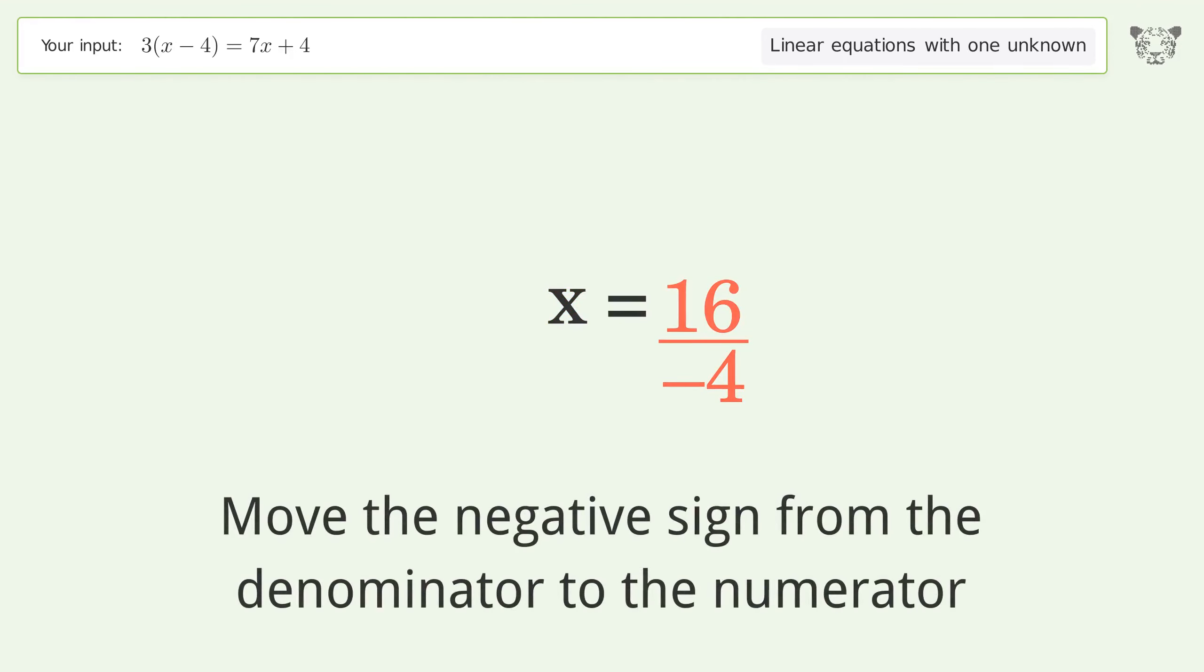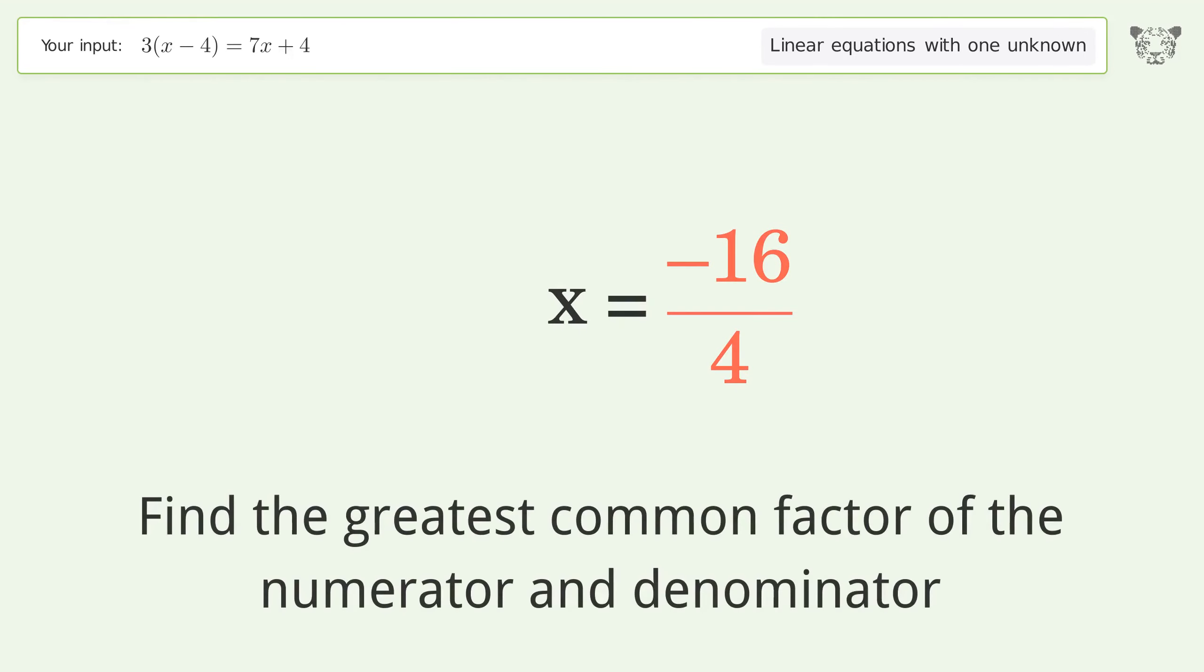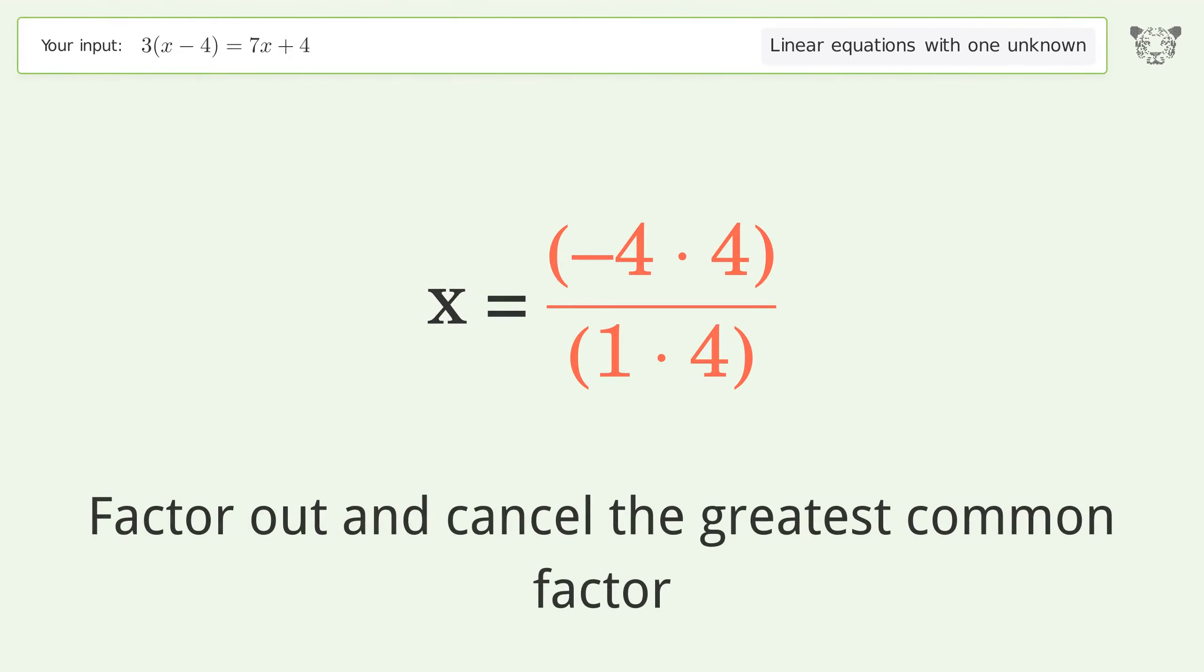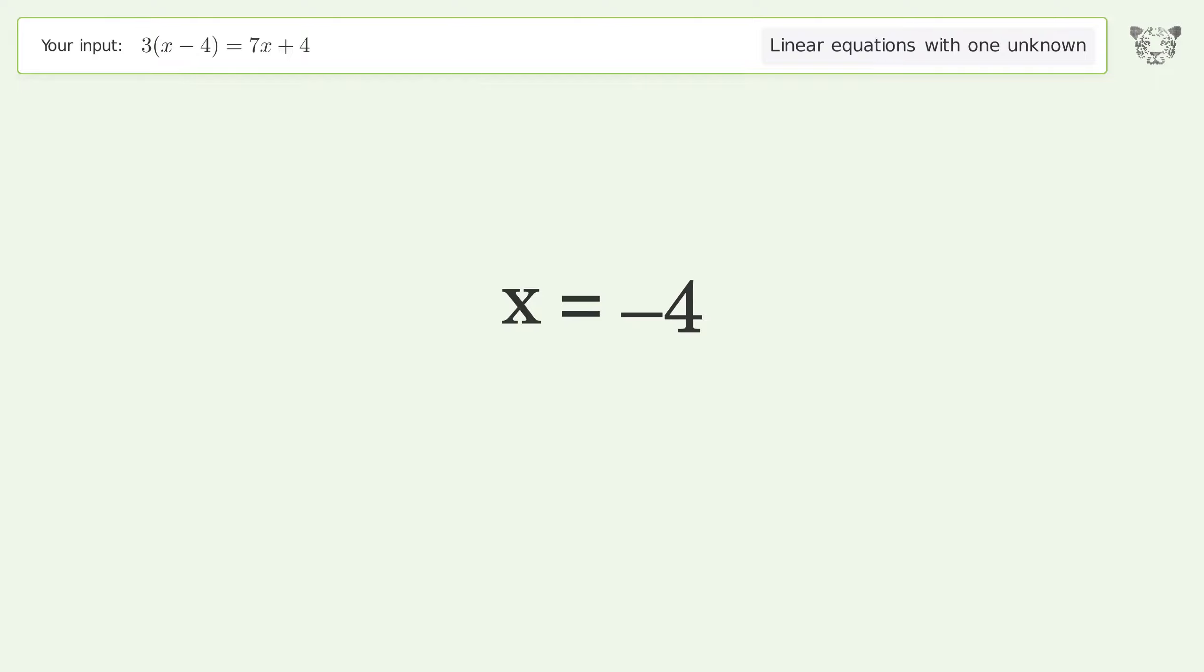Move the negative sign from the denominator to the numerator. Find the greatest common factor of the numerator and denominator, factor it out and cancel the greatest common factor. The final result is x equals negative 4.